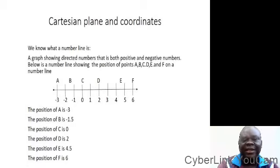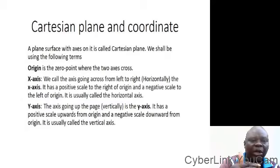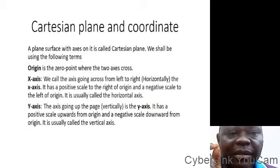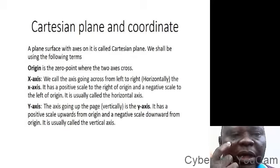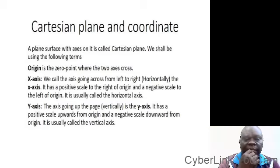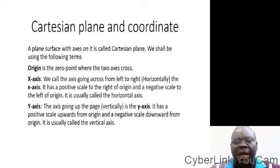Now, having said this, this will give us the basis to look at what a Cartesian plane and coordinate is. What is a Cartesian plane? A Cartesian plane is a plane surface with axes in it. In a Cartesian plane, we have the x-axis and the y-axis. The x-axis runs from the left to the right. It is a horizontal line — it is the line that shows the horizontal coordinate.